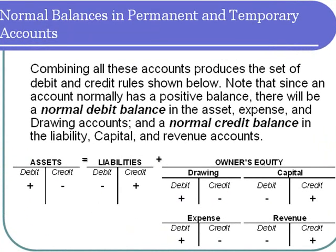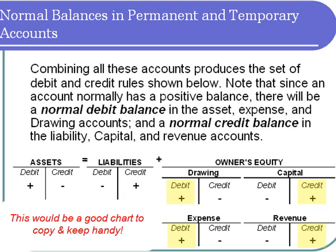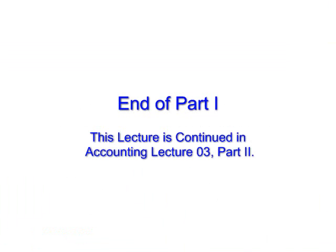What we have presented on this slide is a summary of all the different types of accounts discussed so far, along with the debit and credit rules regarding how increases and decreases are recorded in them. Normally, accounts have positive balances. Asset accounts would normally have a debit balance. Liability accounts would have normal credit balances. For owner equity, the capital account and the revenue account will have normal credit balances. The drawing account and expense accounts would have normal debit balances.